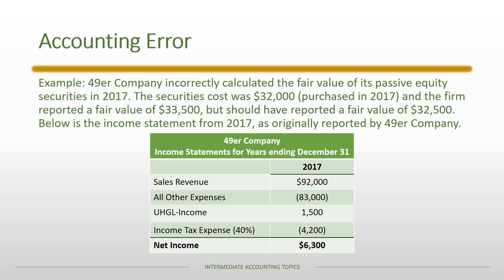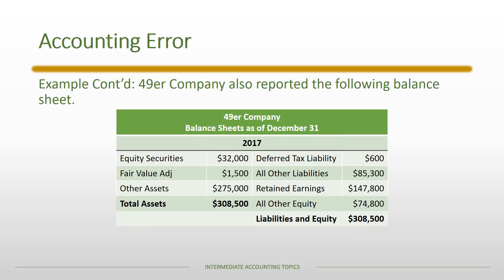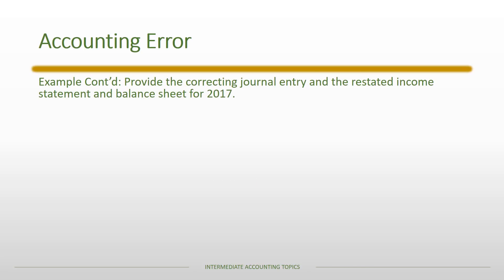Here is another example. 49er Company incorrectly calculated the fair value of a passive equity security in 2017. The security's original cost was $32,000; the firm reported a fair value of $33,500 but should have reported $32,500 instead. The income statement as originally reported in 2017 calls out the unrealized holding gain or loss — income account separately. Income tax effects are included in this problem. The balance sheet shows the equity security account balance, the fair value adjustment, and a deferred tax liability — all separated so we can see the effects of correcting this error.